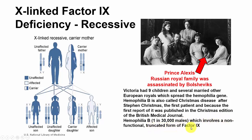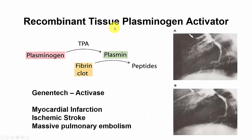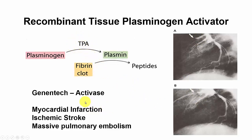Recombinant tissue plasminogen activator (TPA) has been used clinically. Plasminogen is a blood plasma zymogen activated by TPA to make plasmin, which then dissolves the fibrin clot into peptides. The recombinant form is called Activase, originally designed to treat myocardial infarction but also used to treat ischemic stroke and massive pulmonary embolisms. After treating a blood clot with TPA, the blocked vessel reopens. Genentech developed it and it is still used primarily to treat ischemic strokes caused by blood clots.